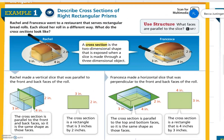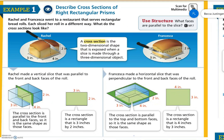Example number one: Describe the cross sections of a right rectangular prism. Rachel and Francesca went to a restaurant that serves rectangular bread rolls. Each sliced her roll in a different way. What do the cross sections look like? A cross section is a two-dimensional shape that is exposed when a slice is made through a three-dimensional object. Rachel made a vertical slice parallel to the front and back faces of the roll. The cross section is parallel to those faces, so it is the same shape. If we cut it right here, it gives us that rectangle.